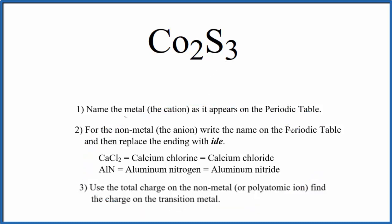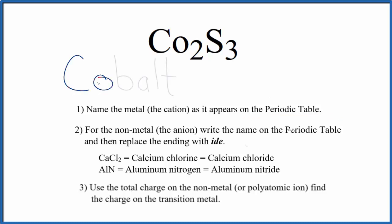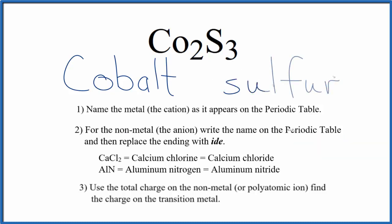First, we write the name of the metal as it appears on the periodic table — Co, that's just cobalt. Next, we write the name for the non-metal as it appears on the periodic table — sulfur — and we take the ending, the UR, and replace that with IDE.